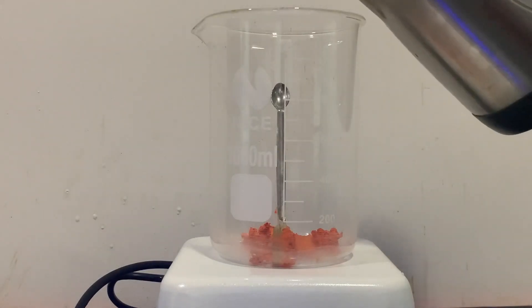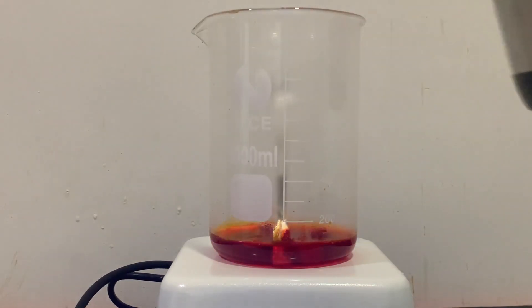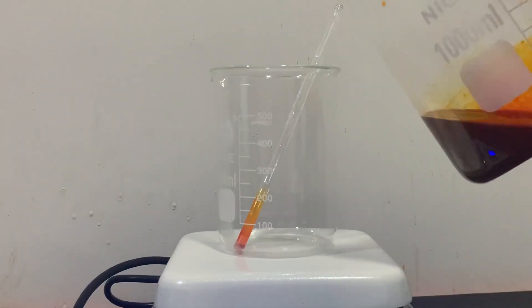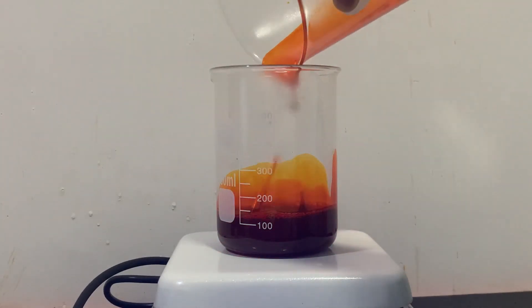The crude methyl orange is transferred to a beaker and is recrystallized with hot water. Once the methyl orange dissolved to form a solution, I poured the solution into a smaller beaker and left it in the freezer to cool down.